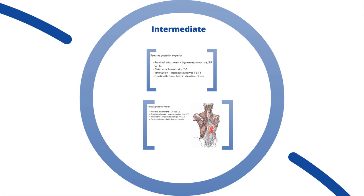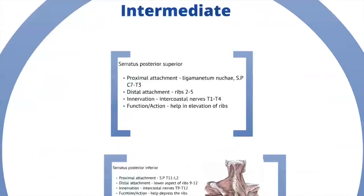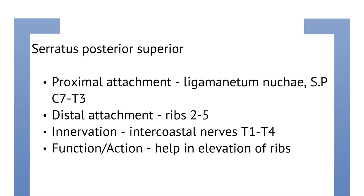Let's move on to the intermediate compartment of the muscles of the back. Starting with the serratus posterior superior muscle — unfortunately because of the awkward position of this muscle we couldn't find a suitable image, so we'll just discuss the attachments. The proximal attachment is the ligamentum nuchae and the spinous processes of C7 to T3. Its distal attachment is ribs 2 to 5, innervated by the intercostal nerves of T1 to T4, and its function is mainly to help elevate the ribs.